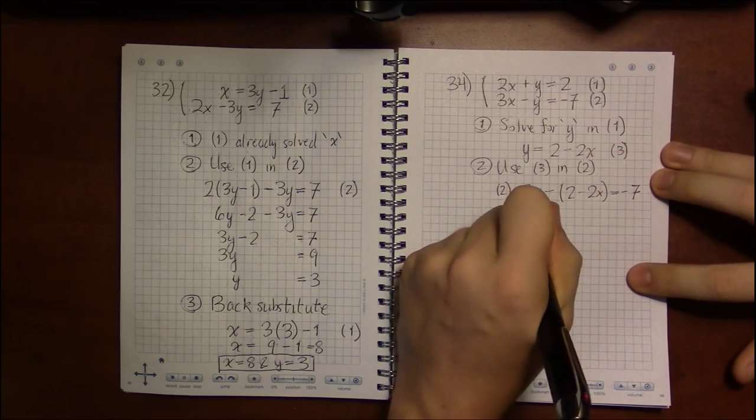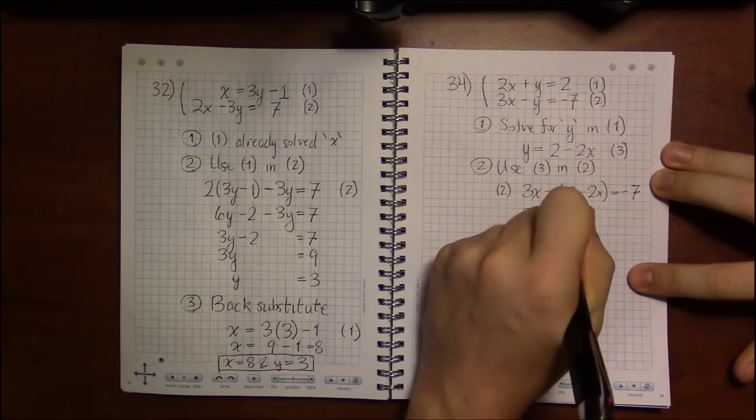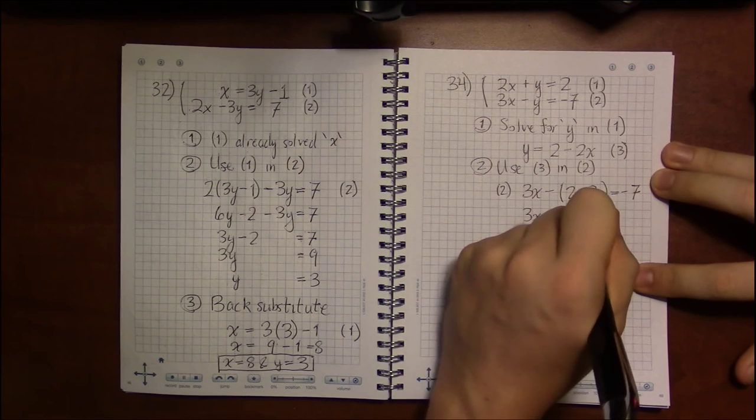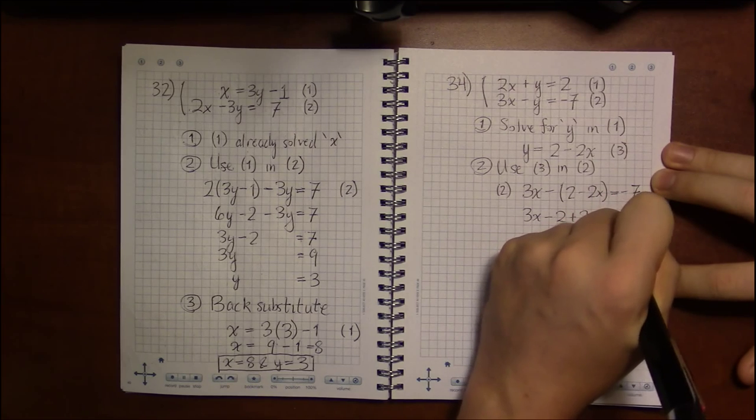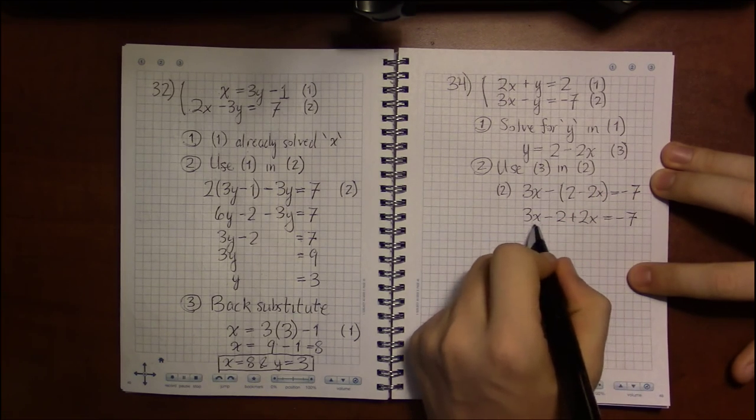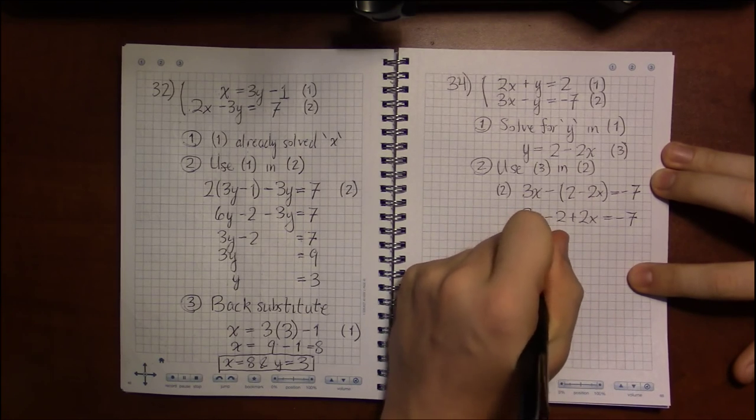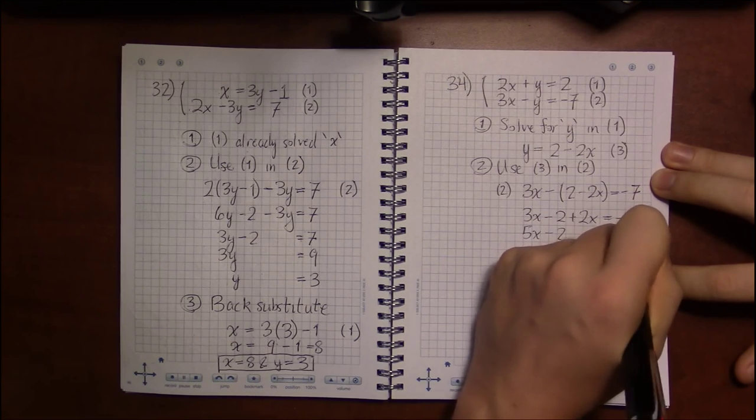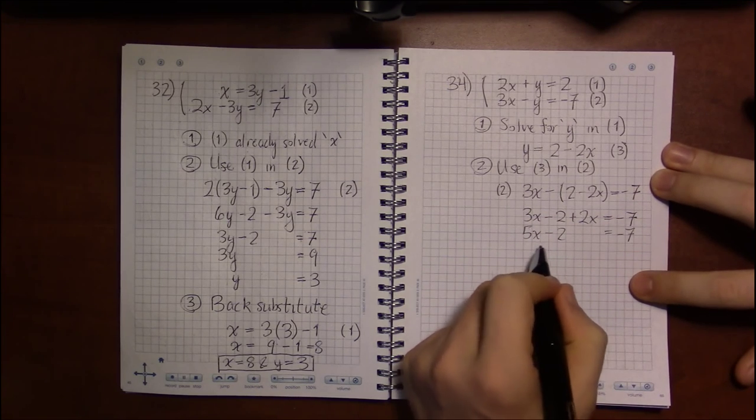We can simplify to get 3x minus 2 plus 2x equals minus 7. So 3x plus 2x is 5x. We can't combine 5x and minus 2; they aren't like terms.